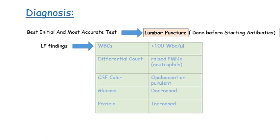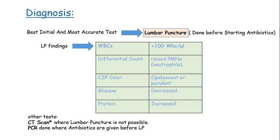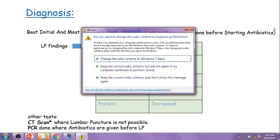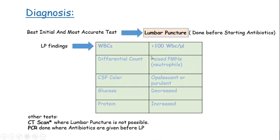CSF color is opalescent or purulent, glucose is decreased, and protein is increased. CT scan is done when lumbar puncture is not possible — for example, in a patient having fits or who is confused. PCR is performed in a patient who has already been started on antibiotics, to confirm the diagnosis.